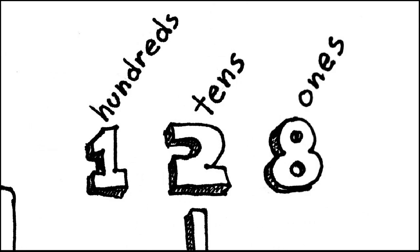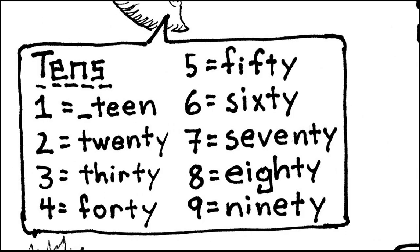Then we can move to the tens place. The tens place is actually the trickiest, because the number says a very different name. You have to remember these rules: if you see a one in the tens place, you say the number in the ones place and then the word teen. If you see a two, you say twenty; three is thirty; four is forty; five is fifty; six is sixty; seven is seventy; eight is eighty; and nine is ninety.